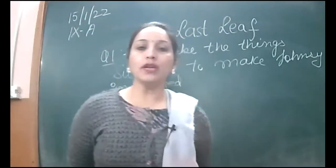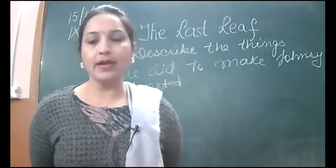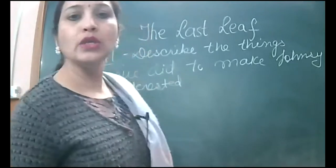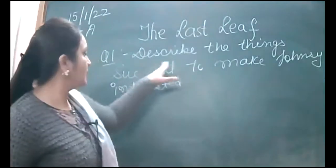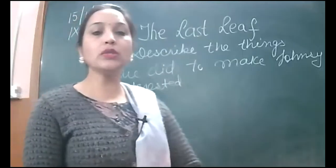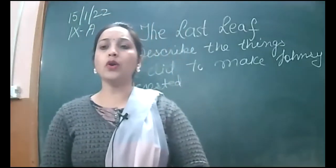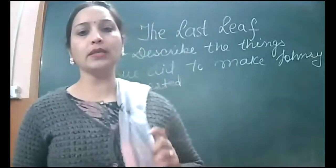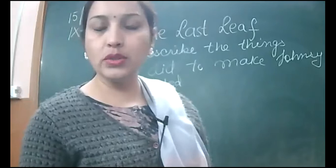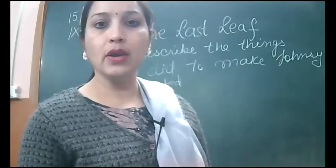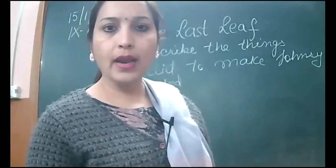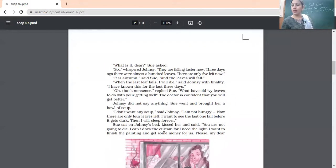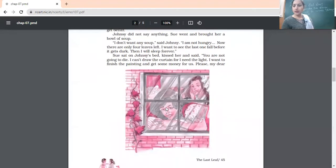In this chapter we have come to know that Jonesy and Sue were both very good friends. In the phase of difficulty, when Jonesy was not well, Sue was looking after her. The question asks you to describe the things Sue did to make Jonesy interested. What were those things Sue was doing in order to make her friend more comfortable and help her recover? Go through the text, underline the lines where you find she has done things for her friend.